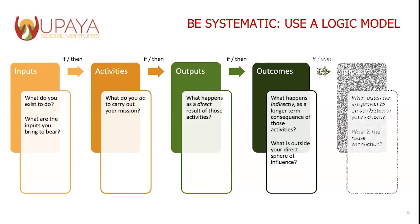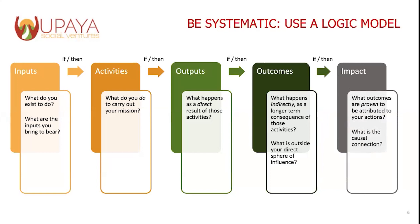And then lastly, as part of the logic model, we have impact. In an academic sense, to prove impact technically means you need to be able to show statistical evidence to link your action to the observed outcomes. This is where you prove that causal connection. And most of the time to do this requires undertaking a randomized control trial or some other rigorous research method.